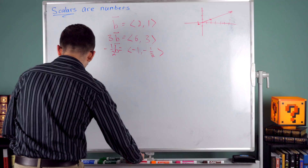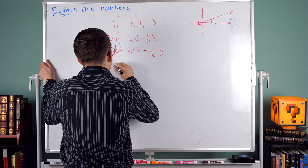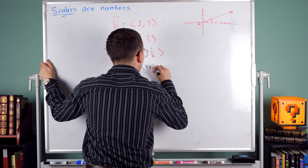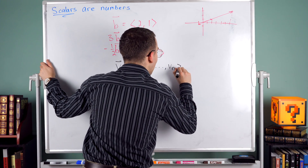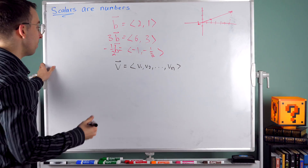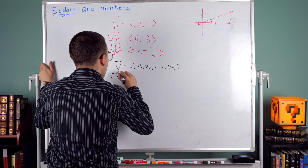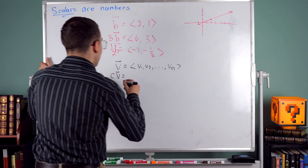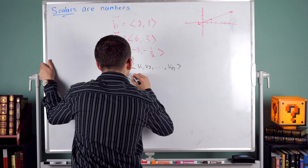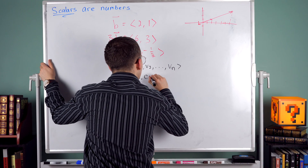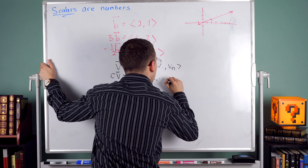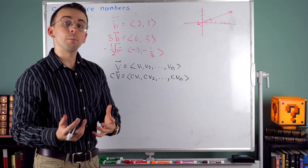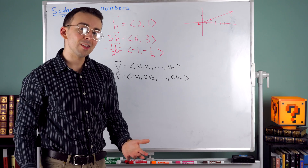If we have a vector V with components V₁, V₂, and so on up to some nth component Vₙ, then the scalar C times the vector V just consists of all of those components scaled by a factor of C. So it's going to be CV₁, CV₂, and so on up to CVₙ. And that is how you multiply a scalar by a vector and what it means geometrically.